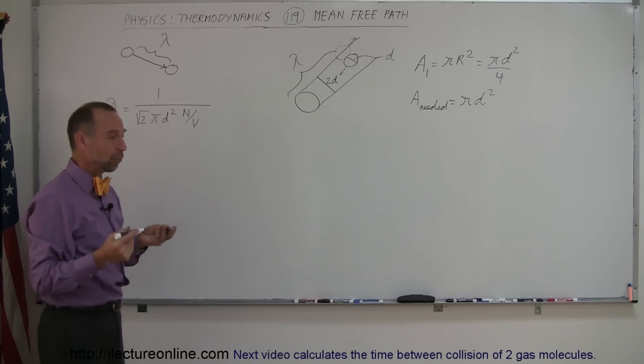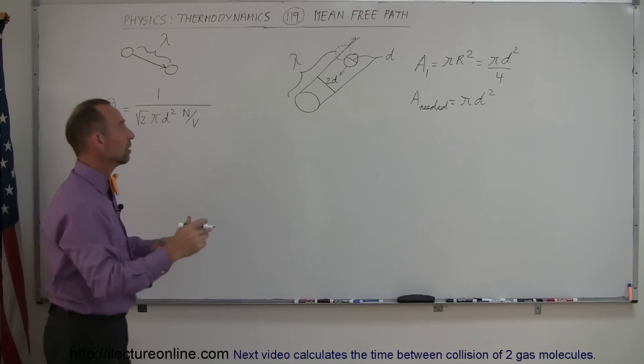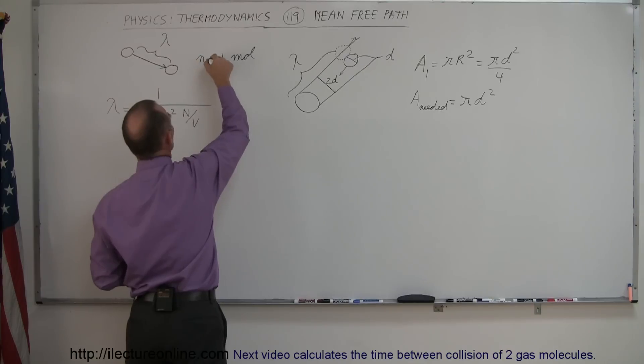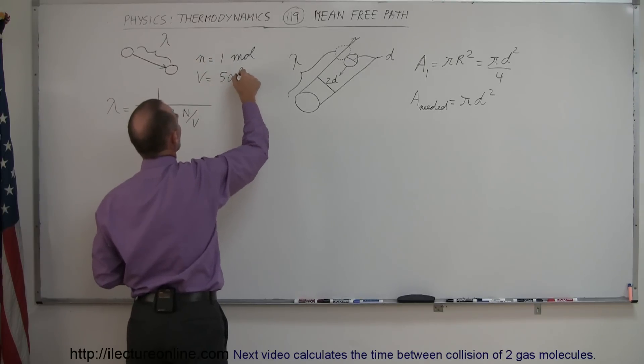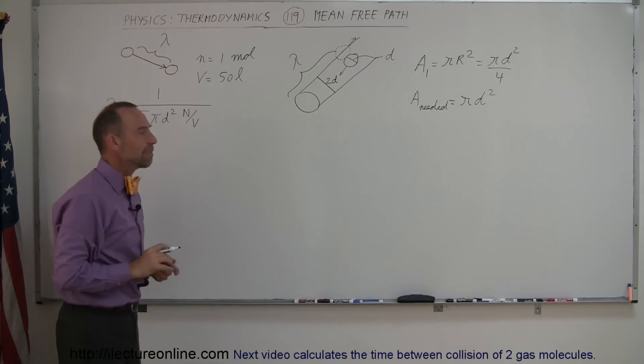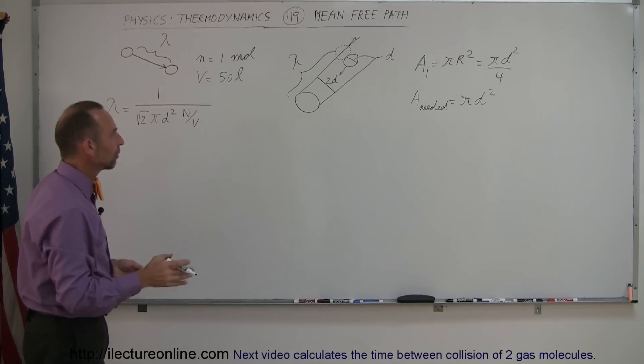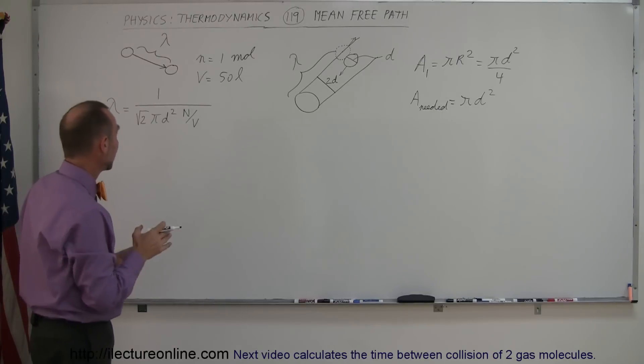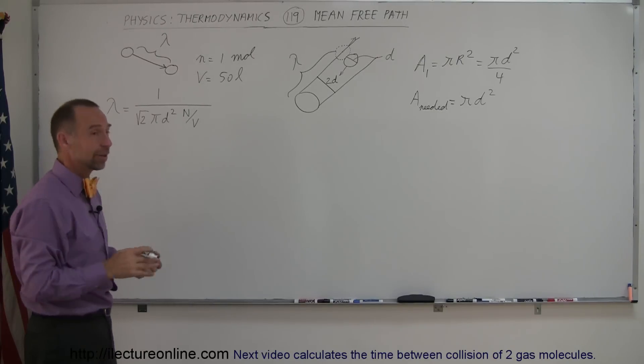So let's say that we have one mole of gas in a container that has a volume of 50 liters. So n equals one and the volume is equal to 50 liters. And we want to know what the mean free path is of these molecules before they collide with another molecule. Notice that it's not even dependent on their velocities or the temperature or anything like that, which is kind of interesting.